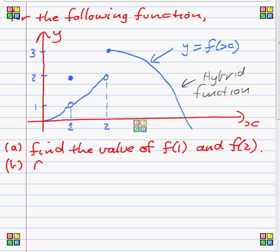Part B says find the limit as x tends to 1 of f(x) and the limit as x tends to 2 of f(x).